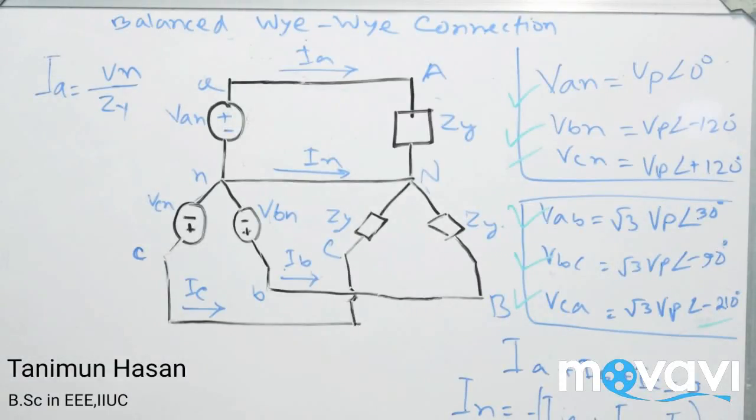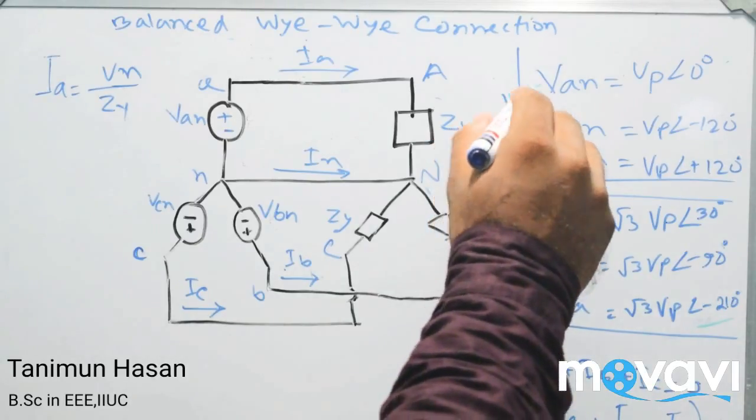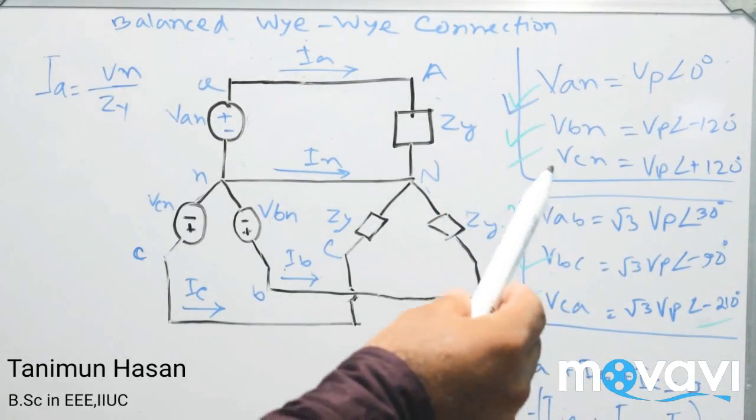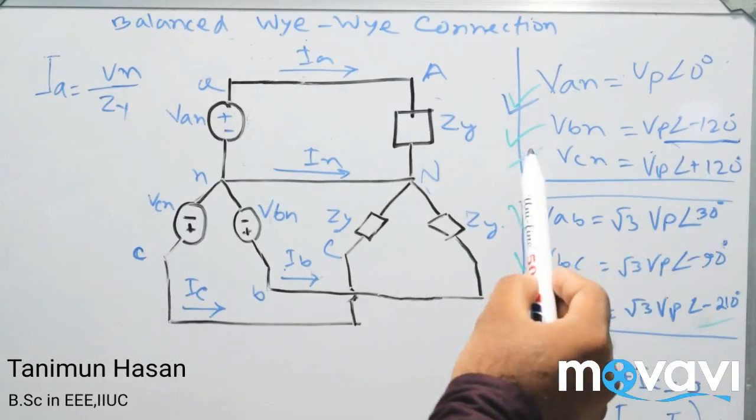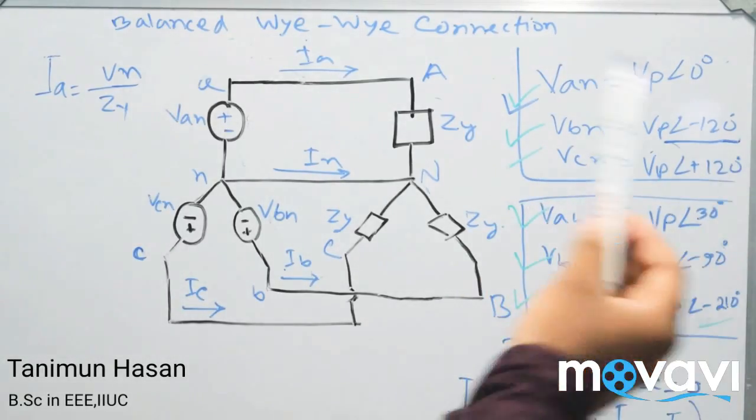I am balanced Y connection. I am going to write this diagram, I will write Bn. Bn equal to BP 0 degree. Bn equal to BP 0 degree, Bn equal to BP plus 0 degree.